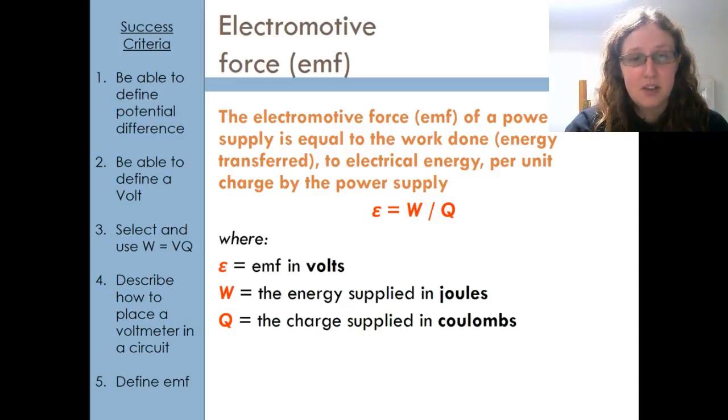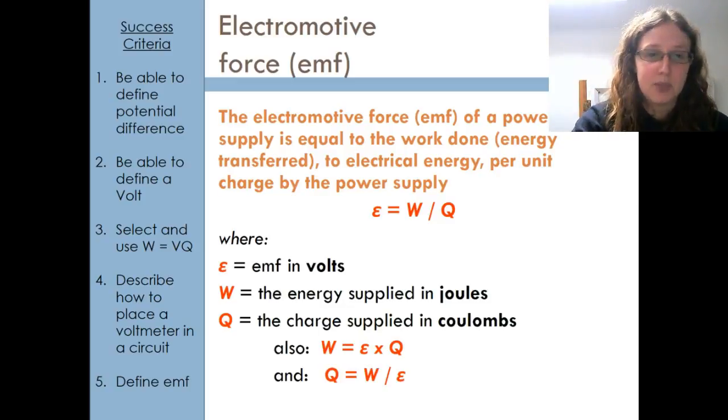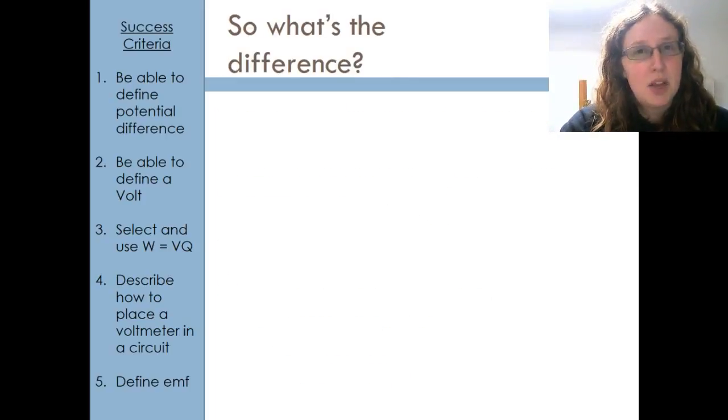But you will see this symbol again for EMF, the lowercase epsilon. So EMF is in volts, W is energy in joules, Q is charge in coulombs, and again we can rearrange. So let's be really clear that we know the difference.